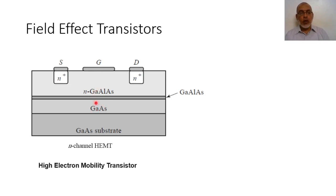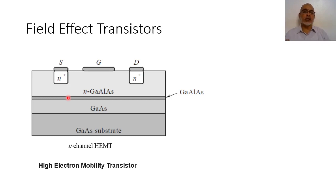This heterojunction introduces a potential well between the N-type gallium aluminum arsenide and the undoped gallium arsenide. This potential will trap some electrons at the interface between the wide bandgap gallium aluminum arsenide and the narrow bandgap gallium arsenide. This trapped electron sheet, or two-dimensional electron gas, will have higher mobility. Generally speaking, if we increase the mobility of the carriers in the transistor, we increase their speed, and if we increase the speed of the carriers, we can use the device at higher frequencies. So if we increase the mobility, we increase the operating frequency.